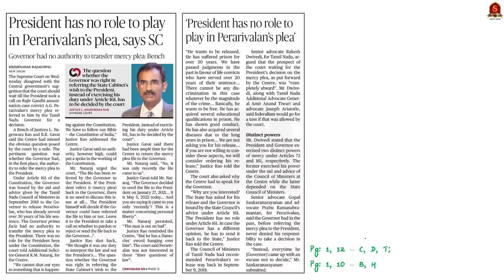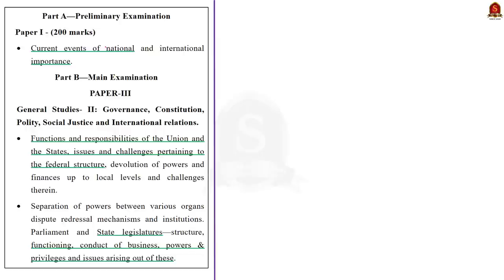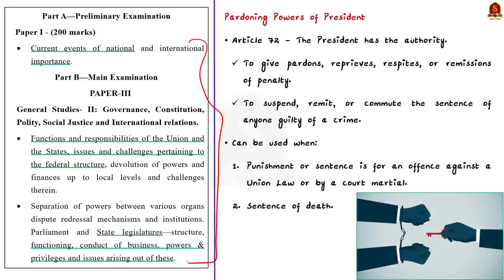The next article talks about the mercy plea by convict A.G. Perarivalan, who was convicted in the Rajiv Gandhi assassination case. The article discusses the pardoning power of President and Governor and certain issues raised by the Supreme Court regarding the mercy plea. The Constitution of India conferred pardoning powers to the President of India and the Governors of States based on Article 72 and Article 161 respectively.